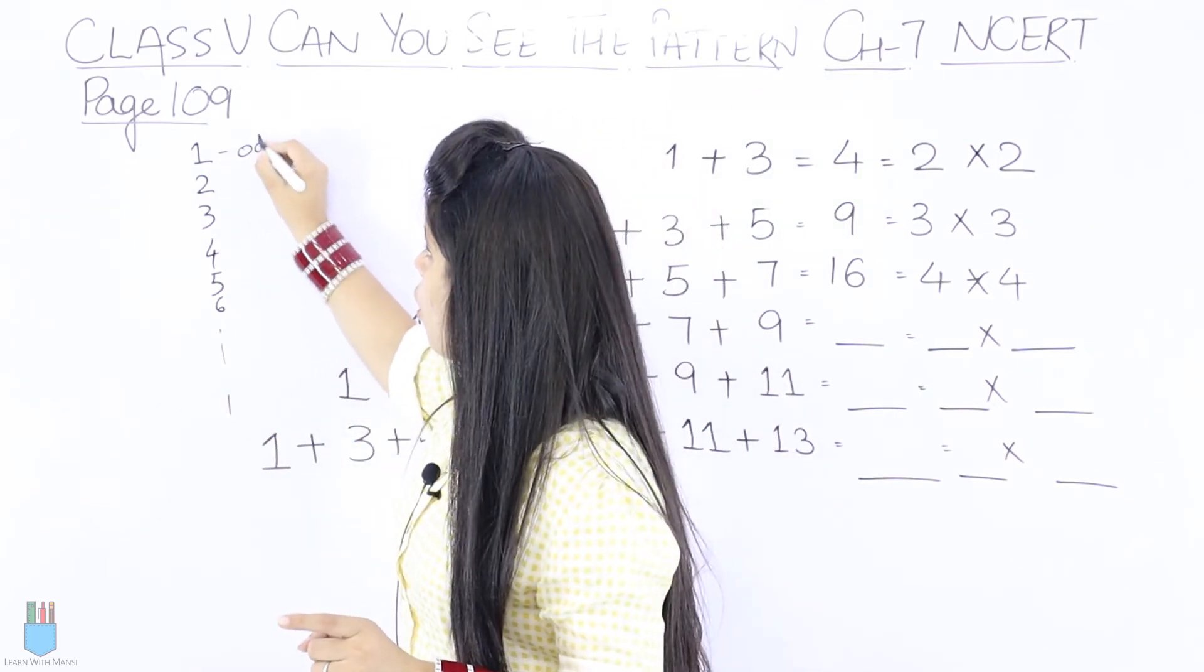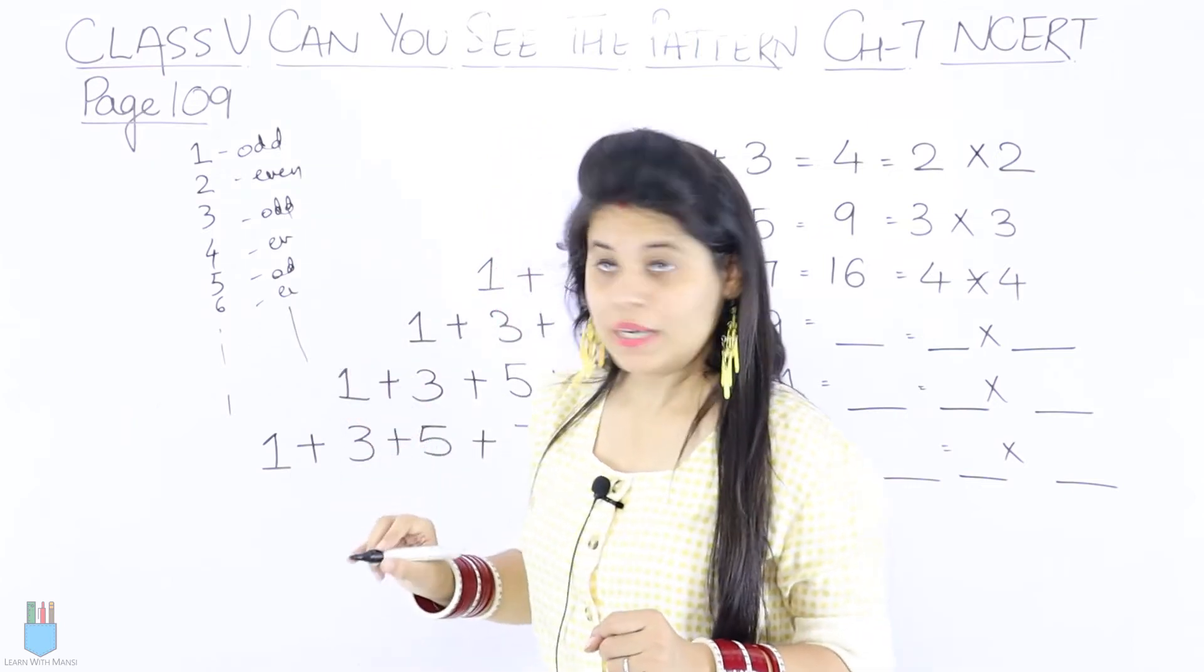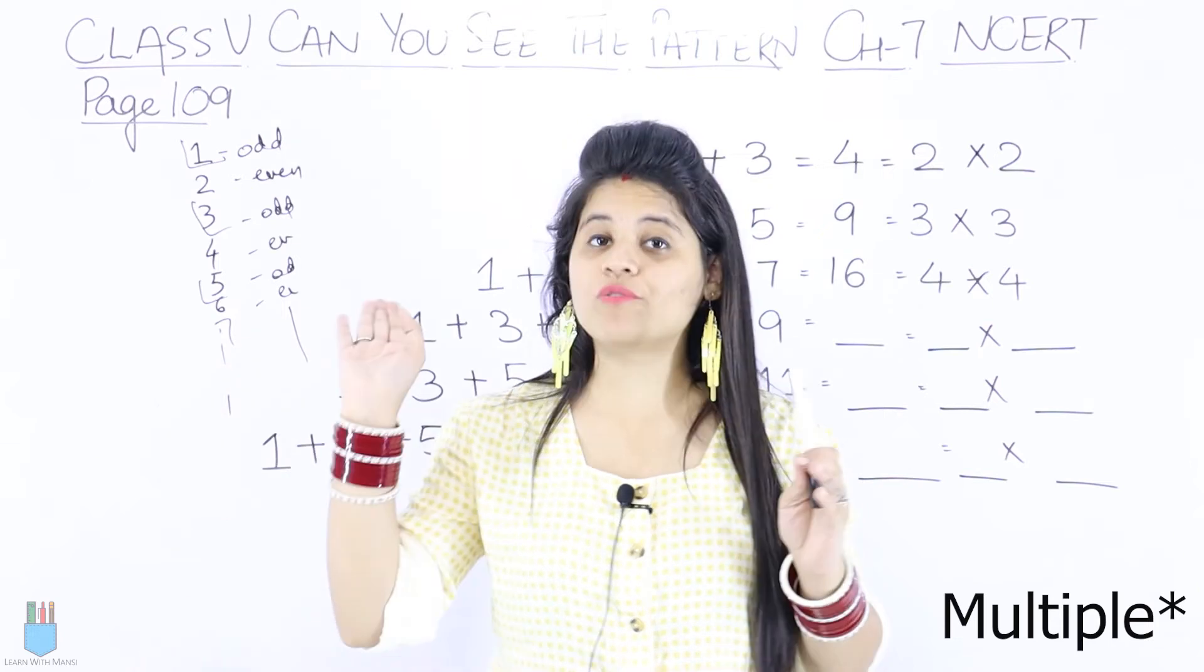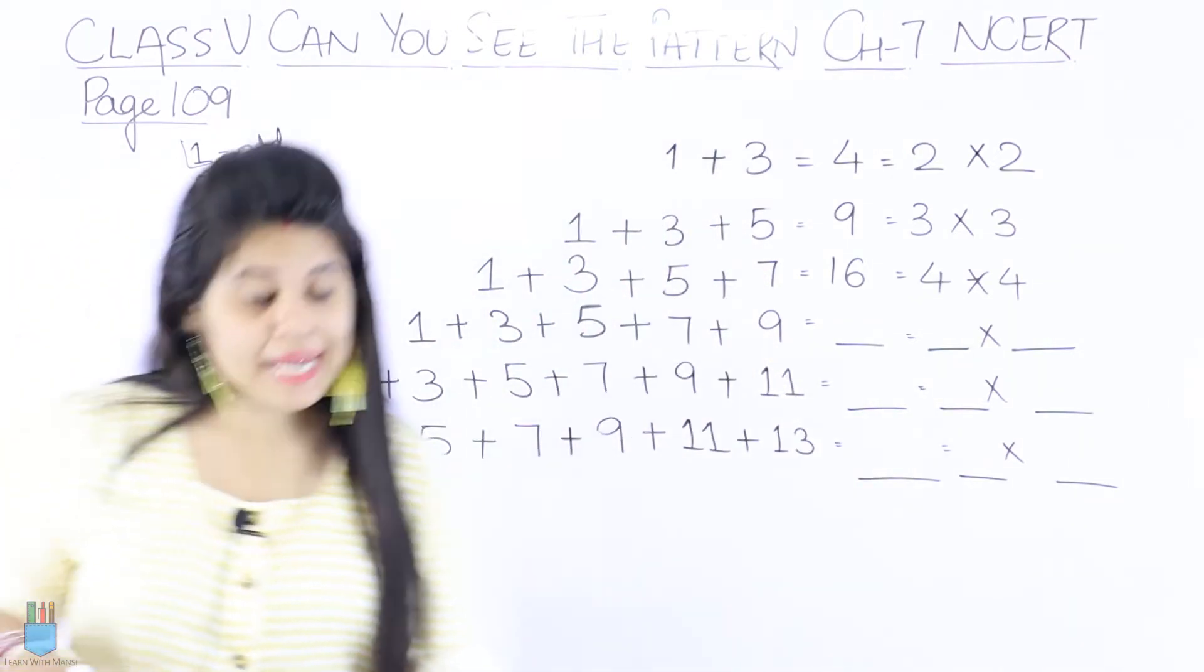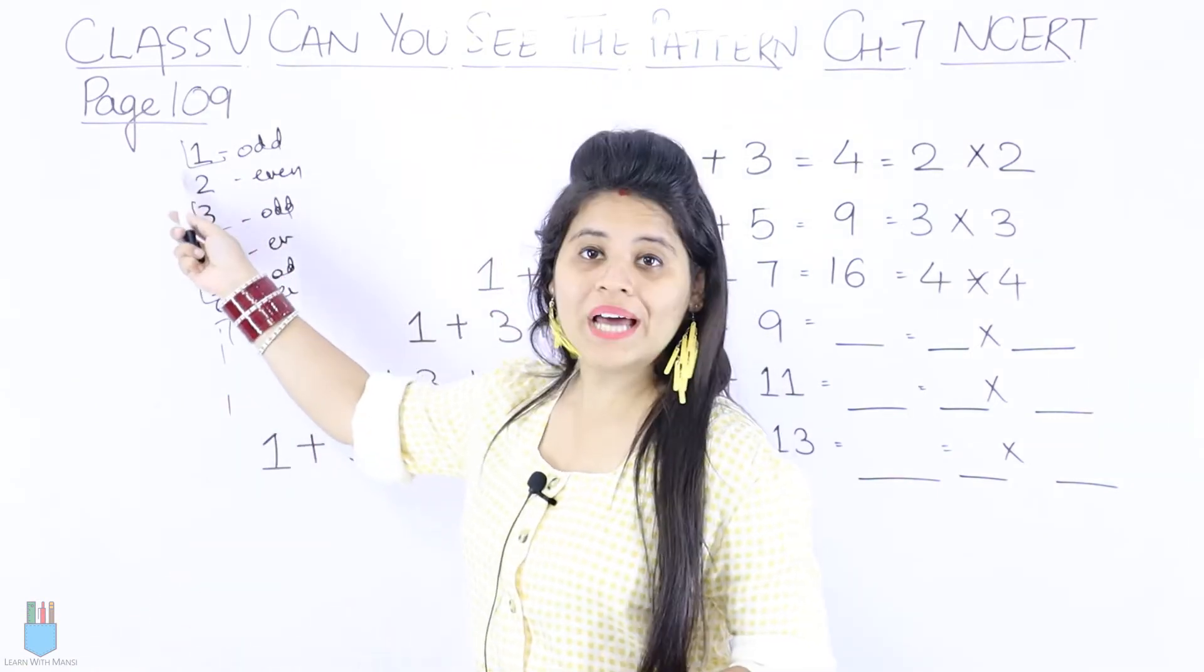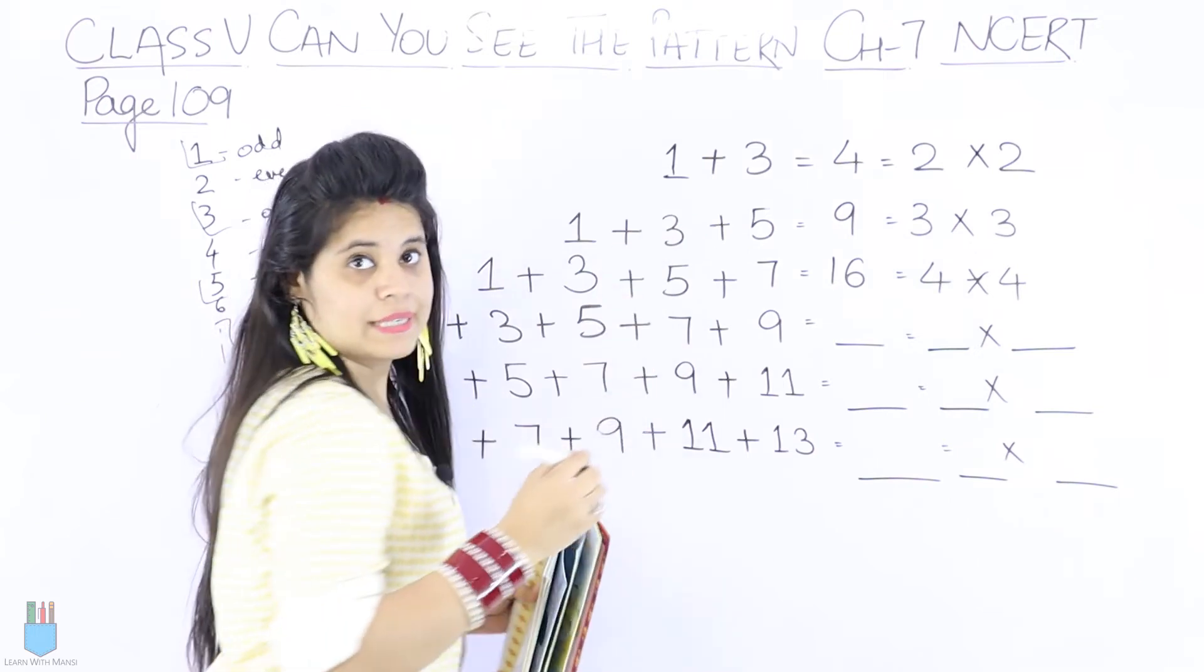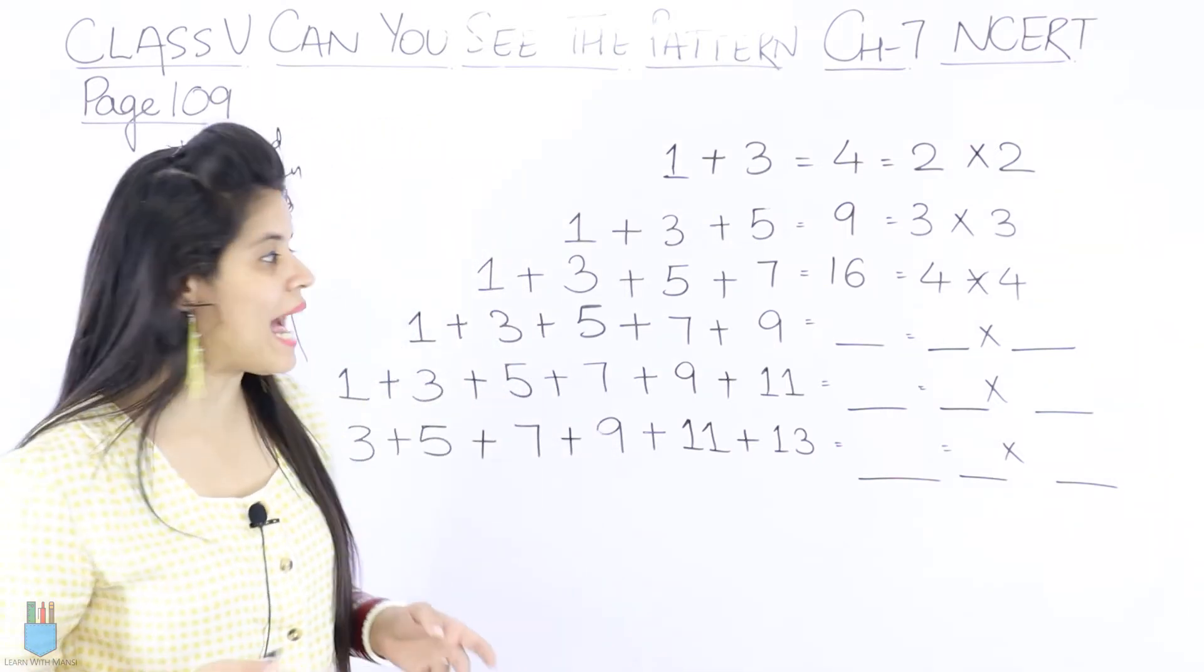The odd numbers are 1, 3, 5, 7, 9, and so on. These are all our odd numbers. Now add them. See what you get. In every step, you have to add the next odd number.